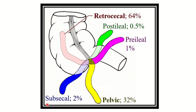First, we can see the different positions of the appendix attached at the cecum, along with the ileum. The most common position is retrocecal at about 64%, then pelvic type at 32%, then subcecal at 2%, pre-ileal at 1%, and post-ileal at 0.5%. These are the different positions of the appendix in a normal person.